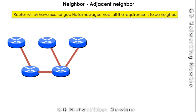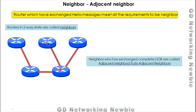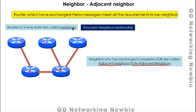Some related terms: routers that have exchanged hello messages and meet all requirements are called neighbors. Routers in two-way state are neighbors — they have exchanged hello messages but have not exchanged the complete Link State Database. Routers that have exchanged the complete LSDB are known as adjacent neighbors or fully adjacent neighbors. In terms of relationship, the first type forms a neighbor relationship, while adjacent neighbors form an adjacency.